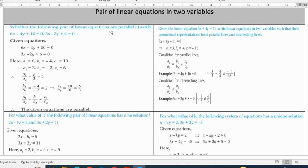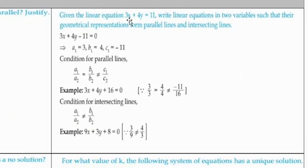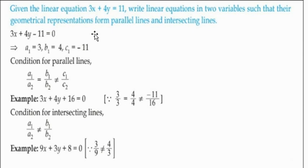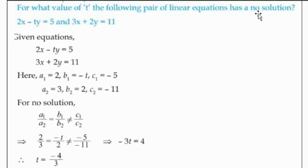Pair of linear equations in two variables: check whether the given linear equations are parallel or not. Compare the ratio a1 by a2, b1 by b2, c1 by c2. If a1 by a2 equals b1 by b2 not equals c1 by c2, the lines are parallel. For intersecting lines, a1 by a2 not equals b1 by b2. Find the value of t or k if the lines have no solution.